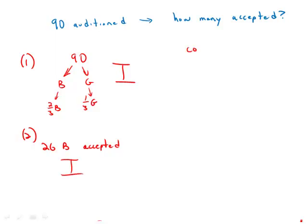Now, if we combine the information, very interesting. If we combine the information, we know that 26 are accepted and that 26 is two-thirds of the number of boys who auditioned. And so that means the number of boys who auditioned has to be 39.